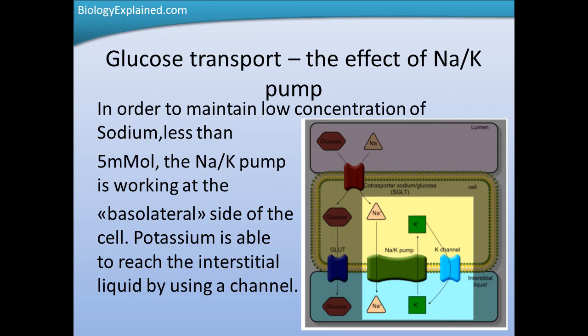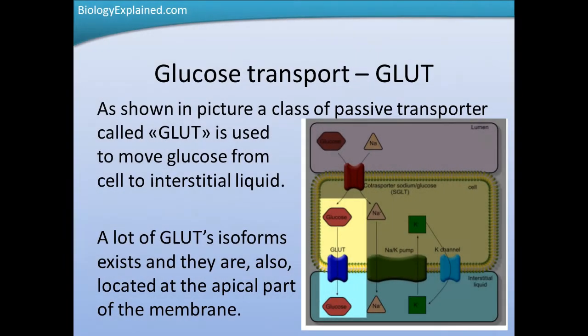Potassium is able to reach the interstitial liquid again by using a channel. Using this mechanism, sodium is always present in low concentration inside the cell, while potassium is present at high concentration. The pump also serves as a vehicle for the SGLT transporter, because it creates the electrochemical gradient. As shown in the picture, a class of passive transporter called GLUT is used to move glucose from the cell to the interstitial liquid. Many GLUT isoforms exist and they are also located at the apical part of the membrane.